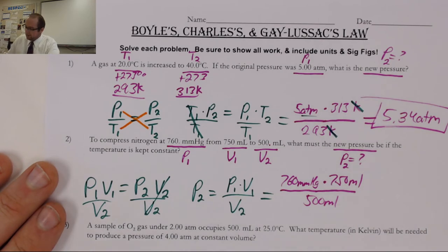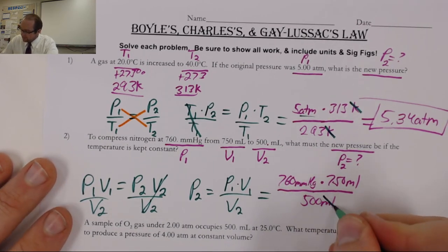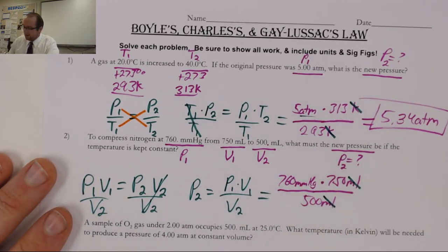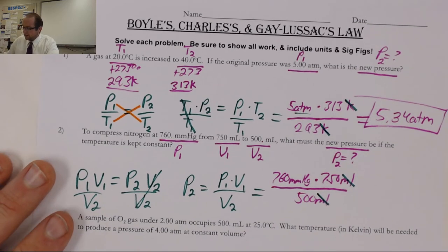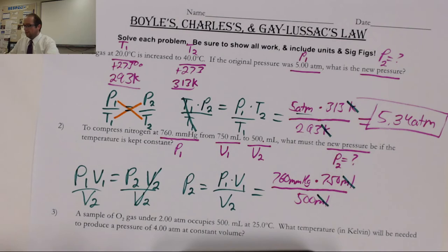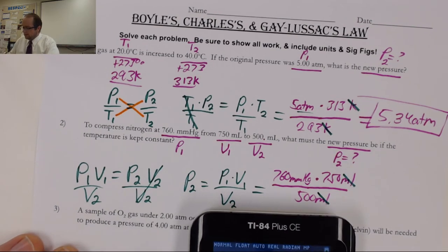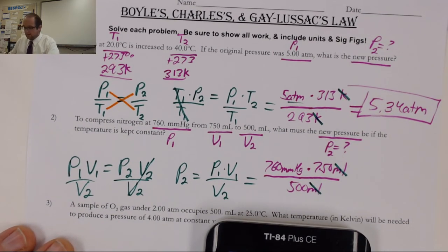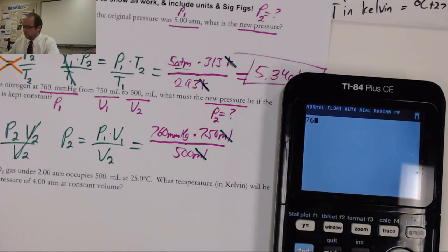So, we can just go ahead and plug those numbers in. We know our P1. That is this 760 mmHg. That stands for millimeters of mercury. I'm multiplying by my V1. That's the 750 milliliters. And then, I'm dividing by the V2. That is my 500 milliliters. Again, let's check to make sure our units cancel out. I have mL cancelling with mL. So, those guys are gone. So, my units should give me millimeters of mercury, a pressure. Let's check our answer here. 760 times 750, enter. And then, divide by 500.